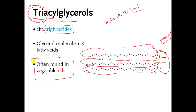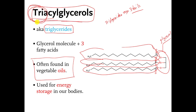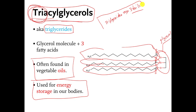Triglycerides are found a lot in vegetable oil, so fried foods have a lot of triglycerides because you fry the food in oil. These are used for energy storage in our bodies — they have a lot of energy stored up in them. The primary thing I want you to know is that triglyceride molecules have three hydrocarbon tails.